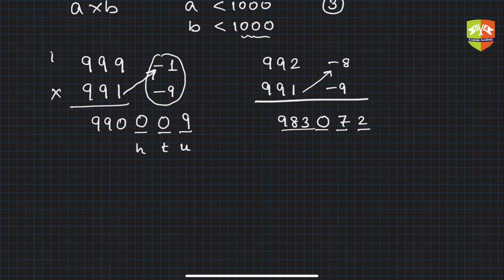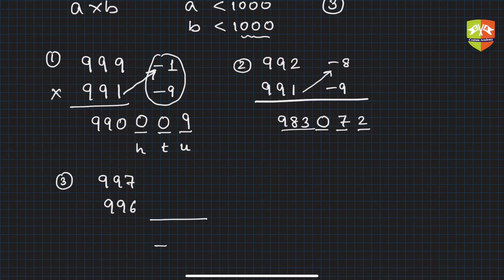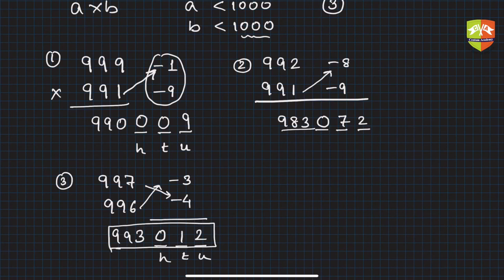Let's take example number 3: 997 × 996. For your understanding, I'm writing HTU, but once you're familiar with the process, you don't need to do it. How much is this away? Minus 3 and minus 4. So -3 × -4 is 12. Write 12, put a 0 because the third digit was missing, and simply 997 - 4 is 993. So 993012 is the product. Isn't it amazing? Very easily you're able to do it.